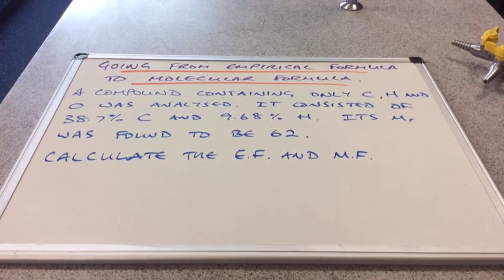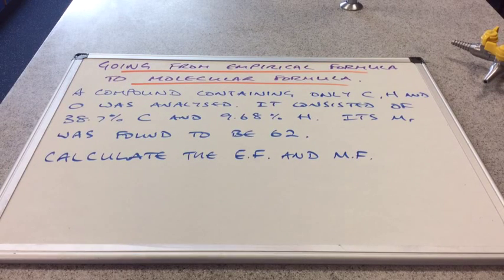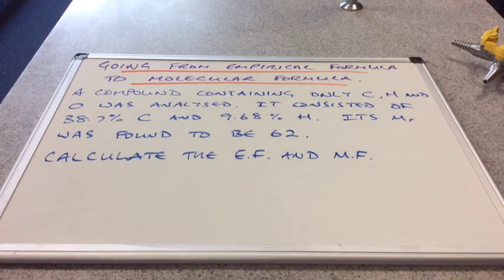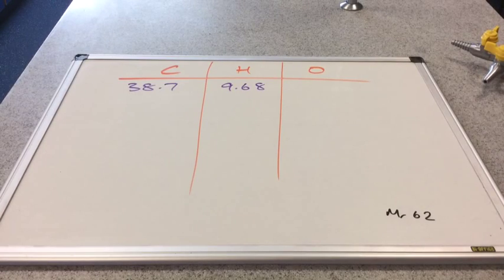I think we're ready now to move on to the molecular formula. I'm going to use this question in blue to do that. So we're told that a compound containing only carbon, hydrogen, and oxygen was analyzed and it was found to contain 38.7% carbon and 9.68% hydrogen. We're also told that its MR, its relative mass, was 62. So we've got to calculate the empirical and the molecular formula for this compound. So I'm presenting the data in the way that we've been shown. We've got our table for our three atoms and there's the data that we're told so far. So we've given two percentages and the MR. So obviously the first hurdle we've got to jump over is we need to work out the percentage of oxygen in the compound.